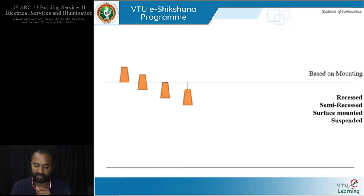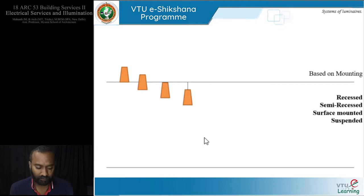Based on mounting, as shown in the graphical representation, luminaires can be recessed, semi-recessed, surface-mounted, or suspended. Apart from the aesthetic variety these four types offer, we can also interpret that the more we increase the distance from the light source to the base plane we expect to be lit, the greater the spread — but at the same time, the amount of light reaching the floor decreases. This is where our inverse square law comes into picture.